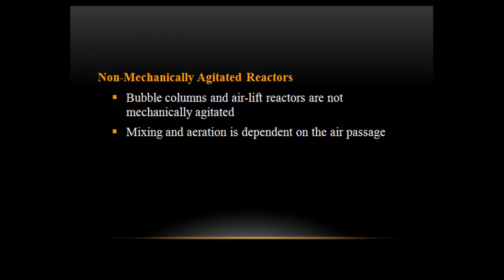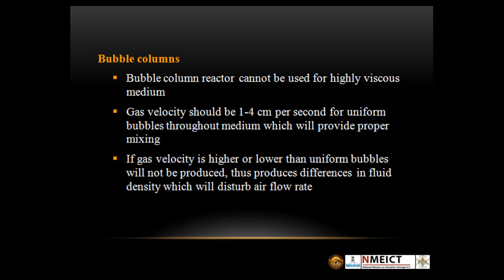Non-mechanically agitated reactors such as bubble columns and air lift reactors rely on air passage for mixing and aeration. Bubble column reactors cannot be used for highly viscous media. Gas velocity should be 1 to 4 cm per second for uniform bubbles throughout the medium, which will provide proper mixing. If gas velocity is higher or lower than this range, uniform bubbles will not be produced, resulting in differences in fluid density that disturb the air flow rate.